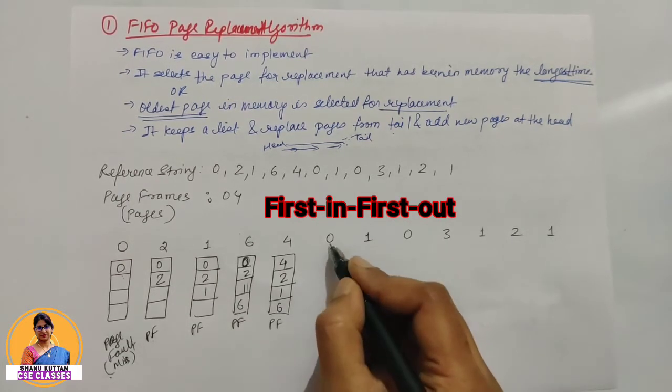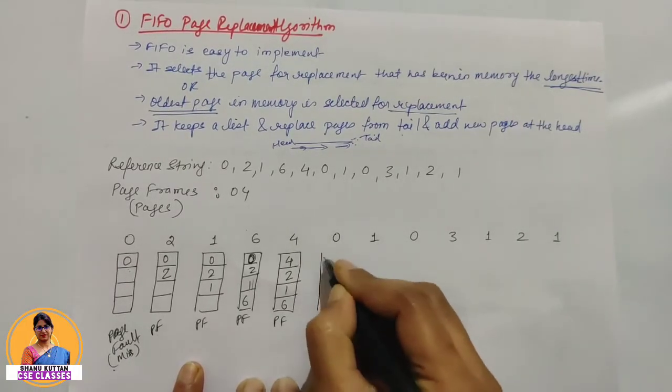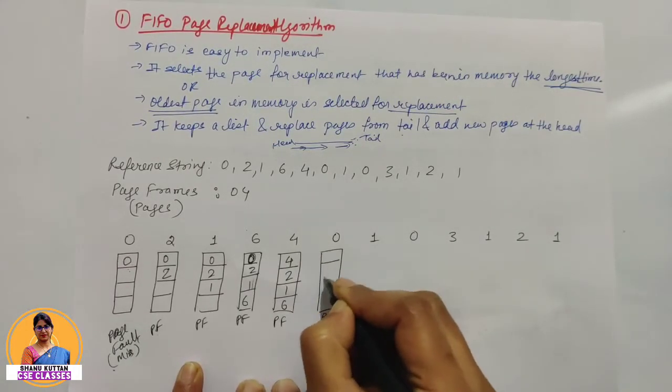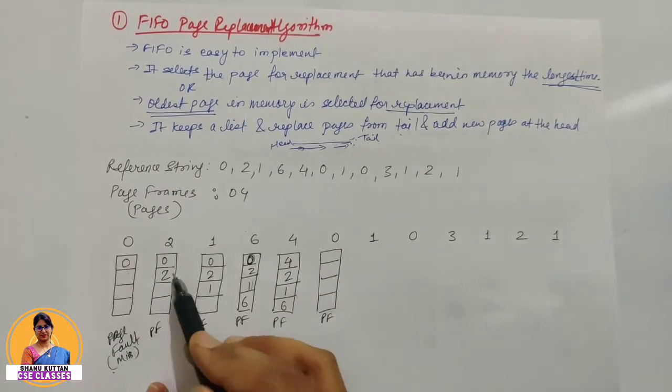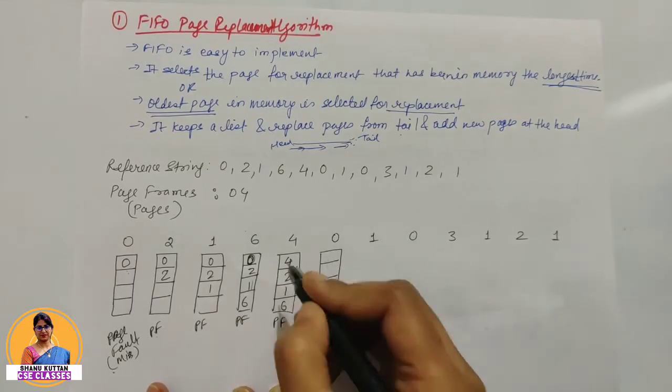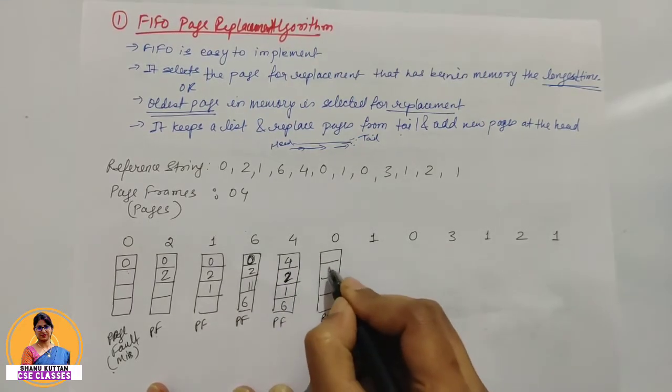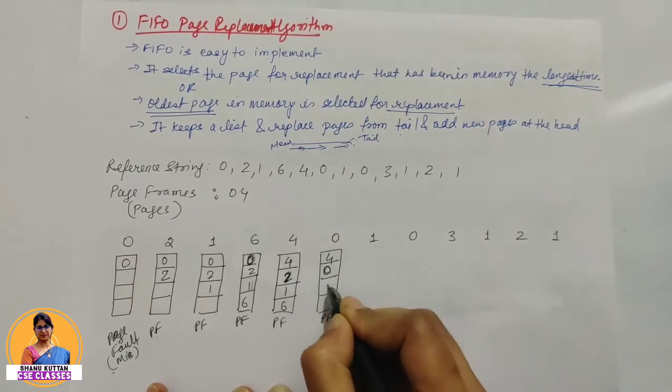Next is 0. Is 0 present? No, page fault. Who will replace? 2 is the oldest, so replace 2 with 0.